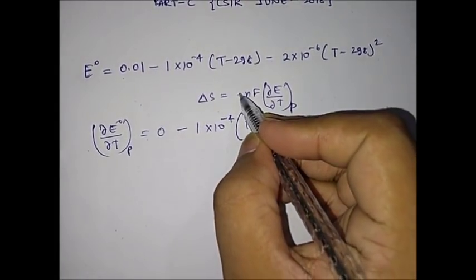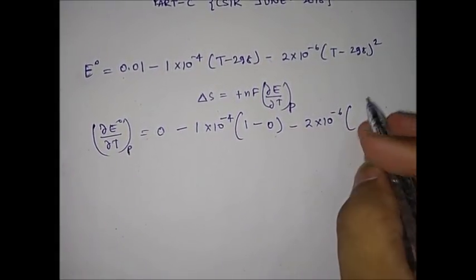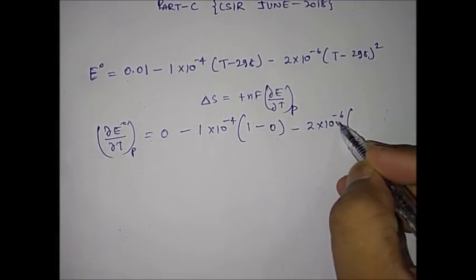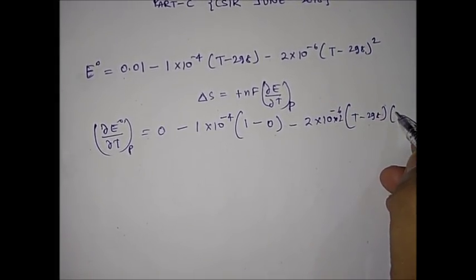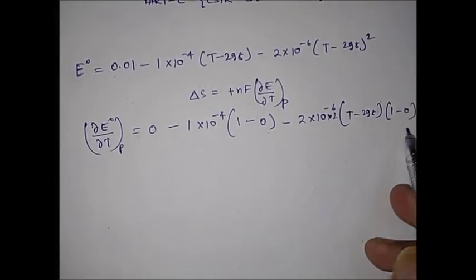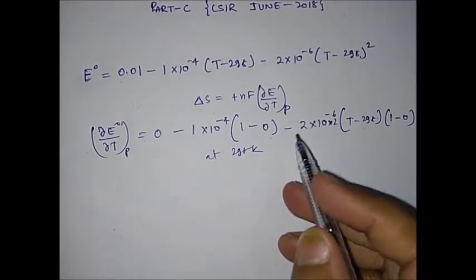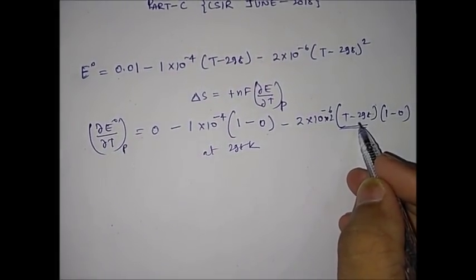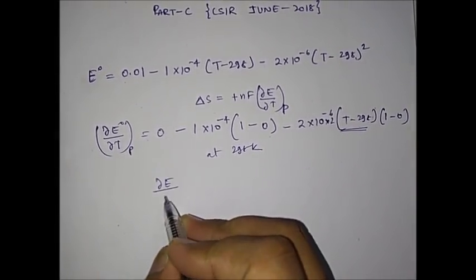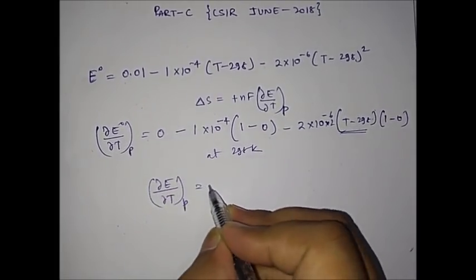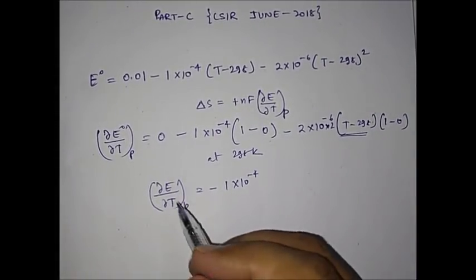So the differentiation gives a term with 10⁻⁶ multiplied by 2(T−298). Now at 298 K, putting T = 298, the term (T−298) becomes zero, so that entire term vanishes. Therefore dE°/dT at constant P equals −1×10⁻⁴.